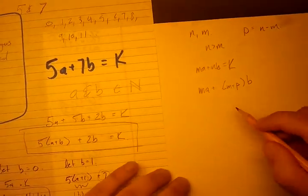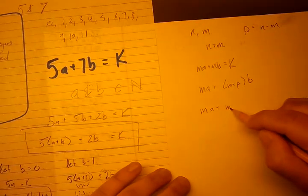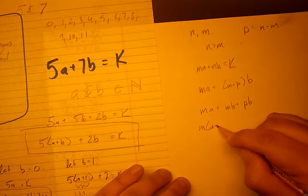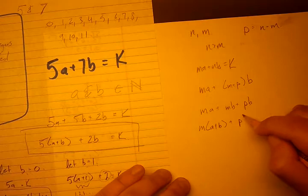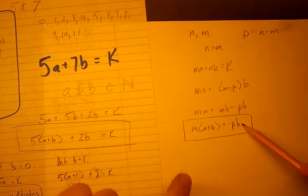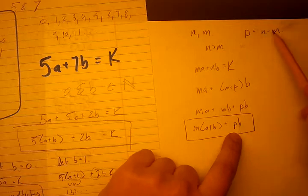So now we're going to split this up. We're going to say m·a plus m·b plus p·b. Group the m. So m(a + b) plus p·b. This is our new problem. And you can see this new problem is the same as the old problem because p is just n minus m.